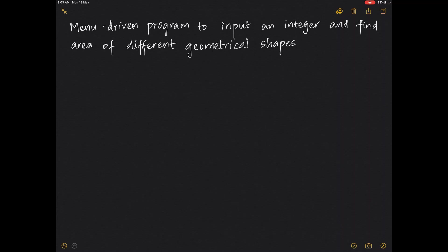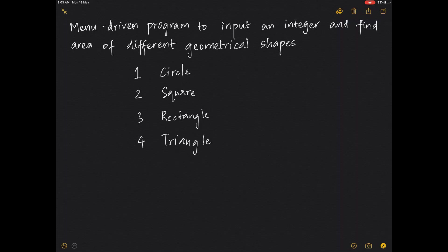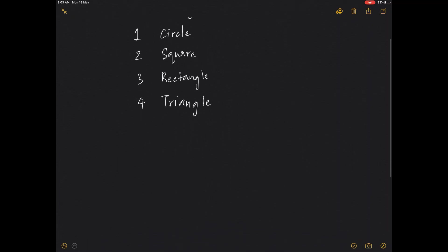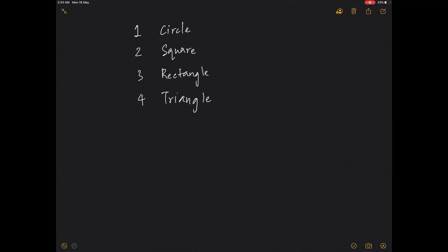So let's say if the user enters 1, I'm going to find the area of a circle; if the user enters 2, it's a square; if the user enters 3, it's a rectangle; and if the user enters 4, it's a triangle. I've created a menu already, now I'll work on finding the areas for these values.